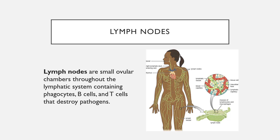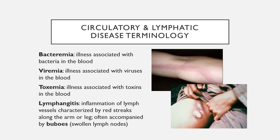As we move through our discussion of diseases, there is some general disease terminology that is good to know. Bacteremia is an illness associated with bacteria in the blood. Viremia is illness associated with viruses in the blood, and toxemia is illness associated not with a live organism but with its toxins contaminating the blood. Lymphangitis is inflammation of lymph vessels, characterized by red streaks along the arm or legs, often accompanied by buboes — the medical term for swollen lymph nodes.